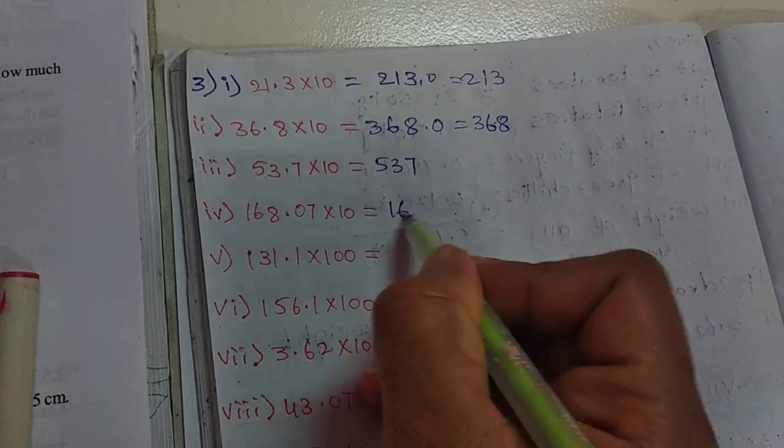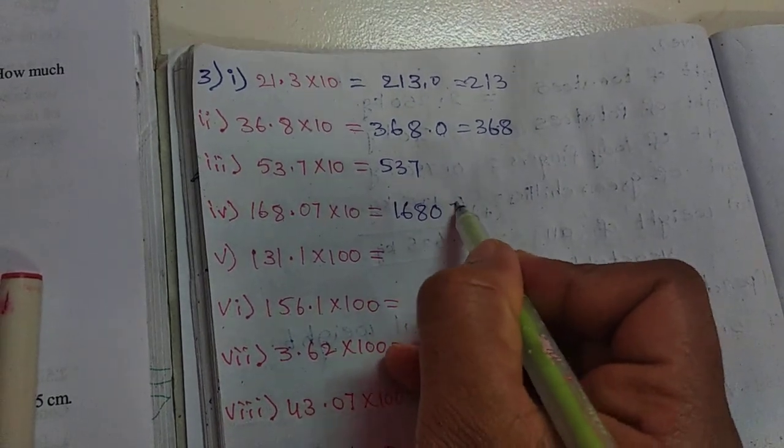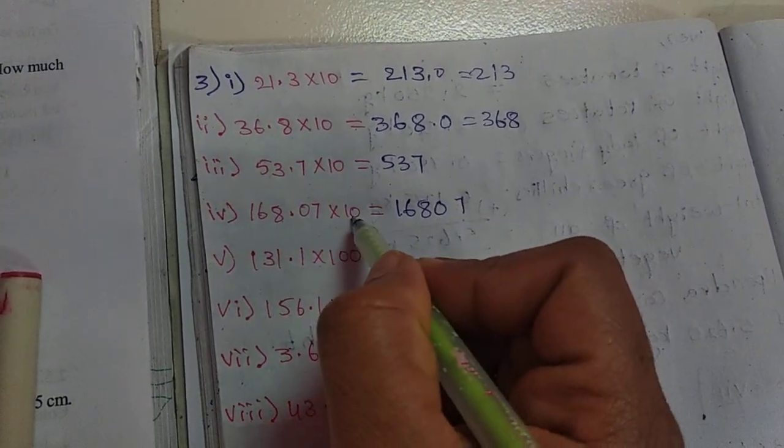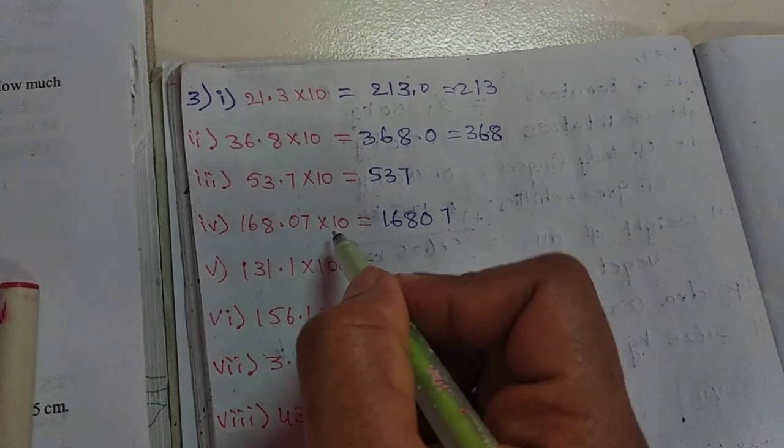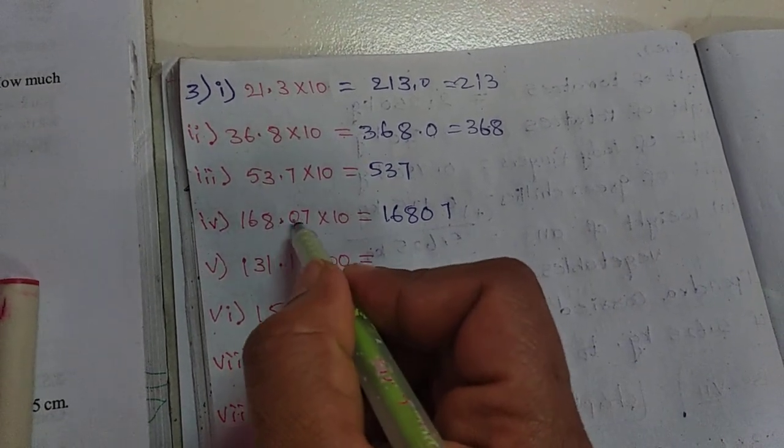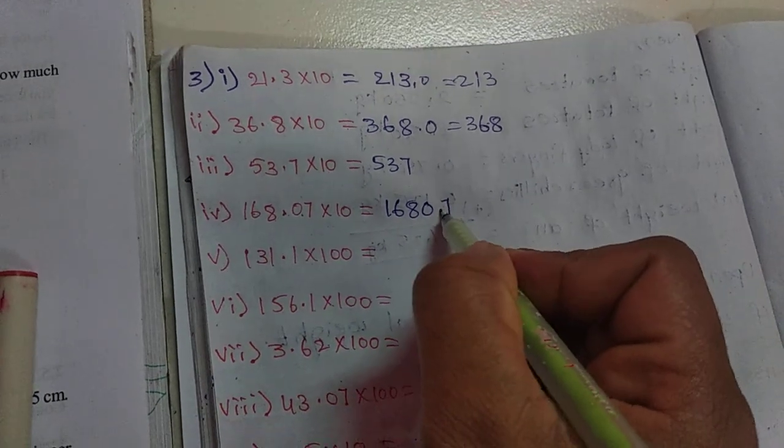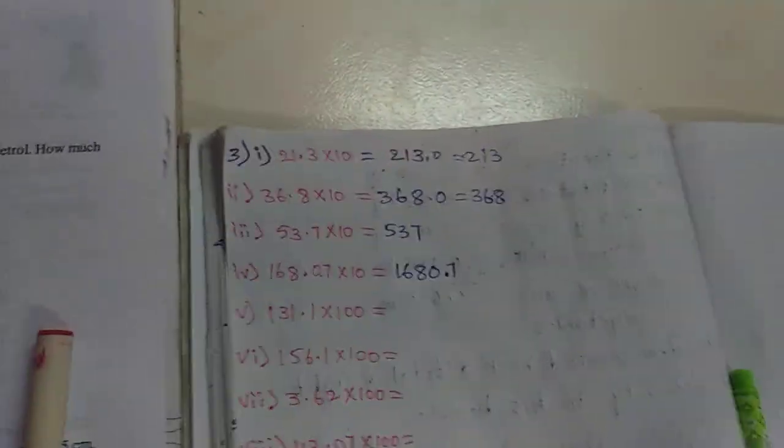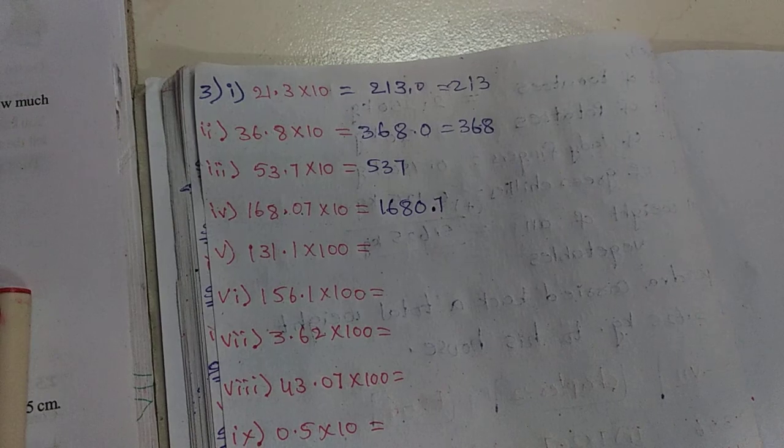This one also same. The point here moves, so the answer is 537. And here, when we multiply by 10, the point moves one digit to the right. Here the point moves one digit, so it will come here: 1680.7.